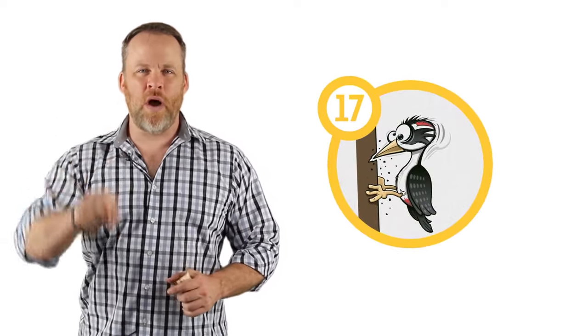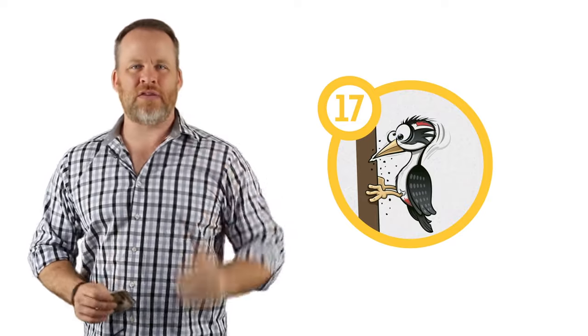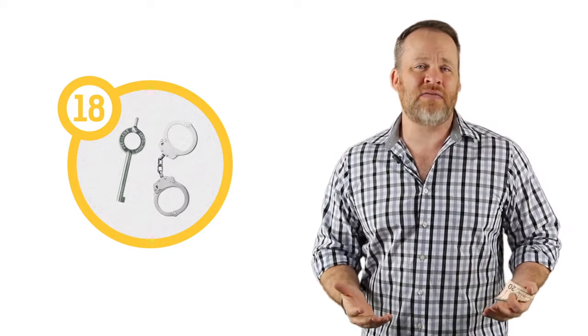Sixteen for me was a car because you've got to be sixteen to get a driver's license. Seventeen I used a woodpecker because the one looked like a tree and the seven looked like a woodpecker pecking away at the tree. Number eighteen for me is handcuffs because the two circles look like the handcuffs and the one looks like the key.